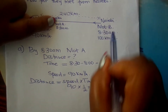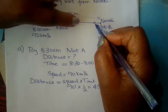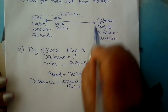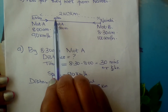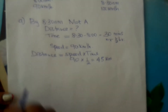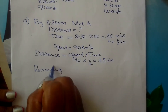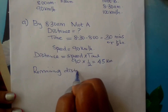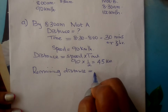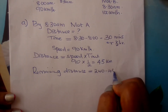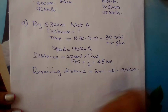From this point to Nairobi, how many kilometres are left for the two motorists to cover as they move towards each other? The remaining distance is the total distance minus what A has already covered: 240 km minus 45 km, which gives 195 kilometres.